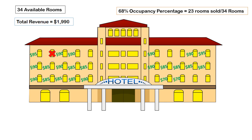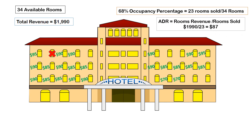The next portion to understand is our occupancy percentage. If you were to look at this hotel, you can see again we have 34 rooms. However, only 23 of these rooms have a number next to it, which means there are only 23 rooms occupied on this particular evening. Therefore, you divide 23 by 34 to get our occupancy percentage, which is 68%.